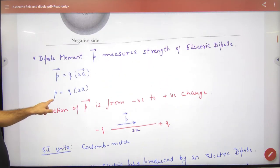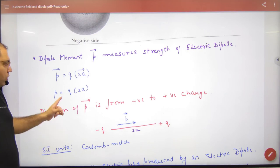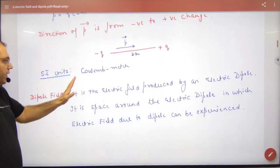Thik yahan tak? Units kya hai? P kya hota hai? Q into 2a. Coulomb meter. Coulomb meter is ke units hai.